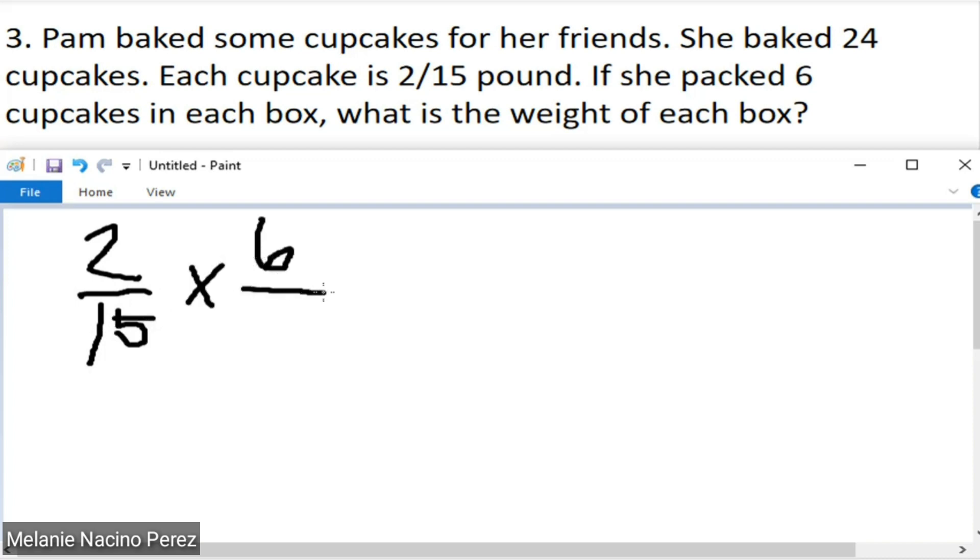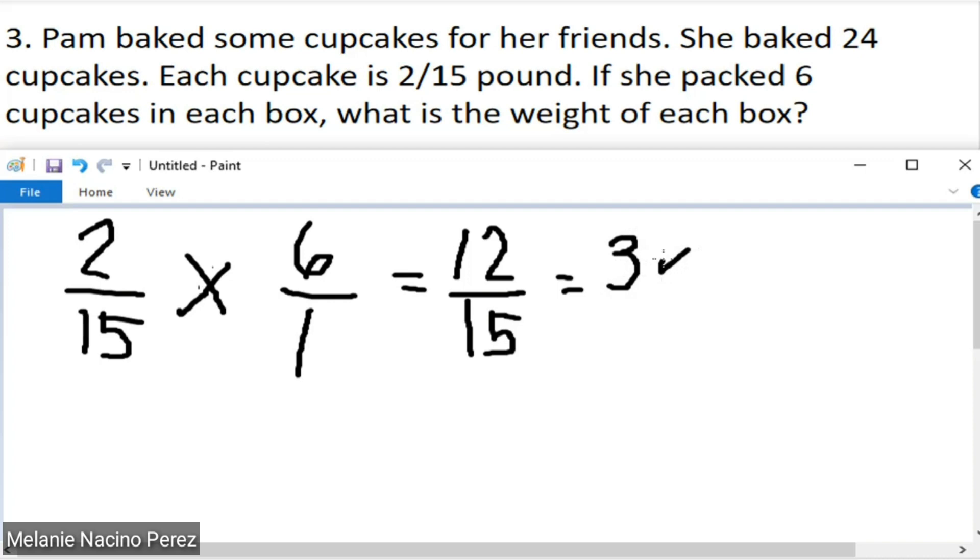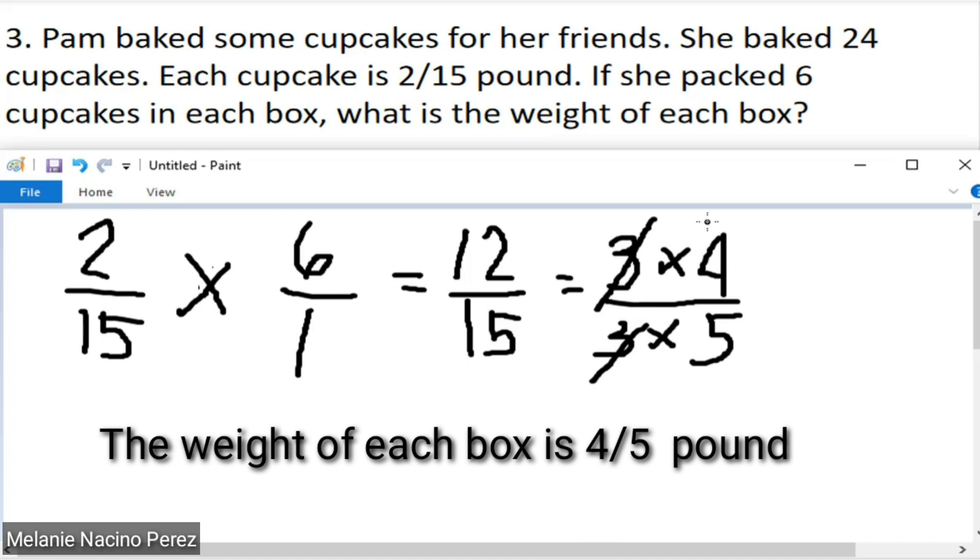What are we looking for? We're looking for 2/15 of 6. Again, since 6 is a whole number, the denominator is always 1. Again, multiply numerator by numerator. 6 times 2 equals 12, and 15 times 1 equals 15. The answer can still be simplified. All we need to do is get the factors of 12, which is 3 times 4. Then 15, the factors are 3 times 5. We cancel the numbers with the same value. Cancel, cancel. What remains is our simplified form. The answer to number 3 is: the weight of each box is 4/5 pound.